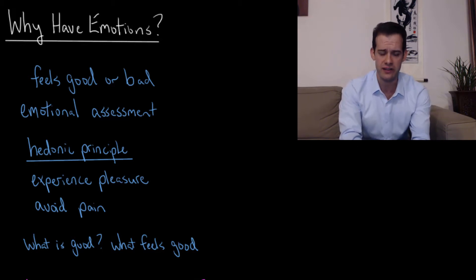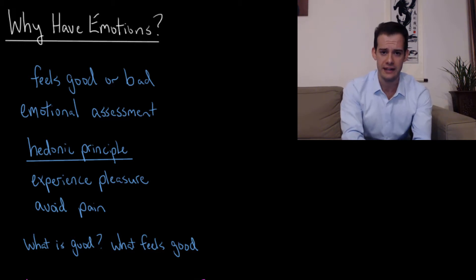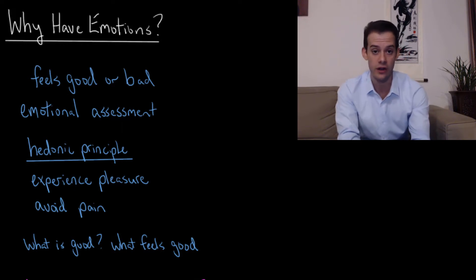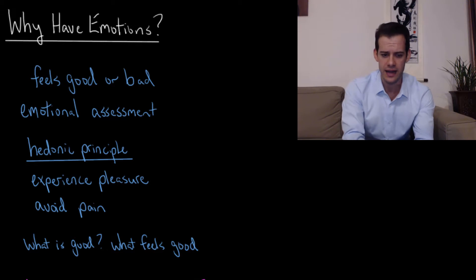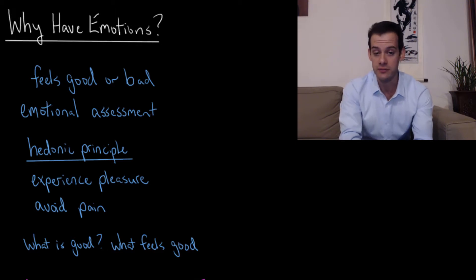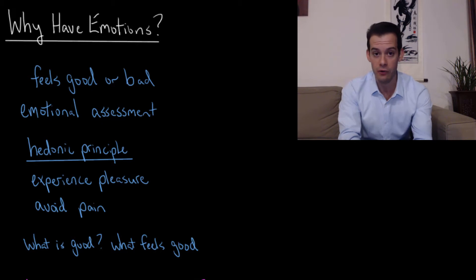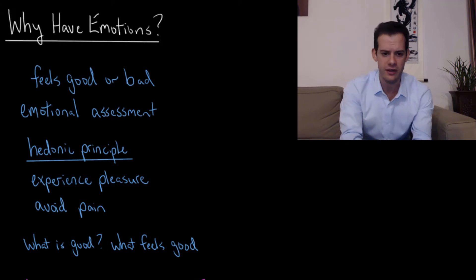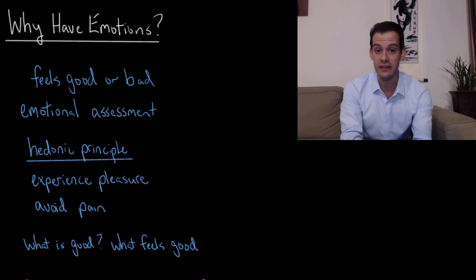This brings us to what's called the hedonic principle. The hedonic principle refers to the idea that we are motivated to experience pleasure and avoid pain — we want things that feel good and we don't want things that feel bad. Of course this is a great oversimplification and isn't the only principle guiding our behavior. We can do things that are not pleasurable now for some future reward; we can make sacrifices. But in general we can tell whether things are good based on how they feel.